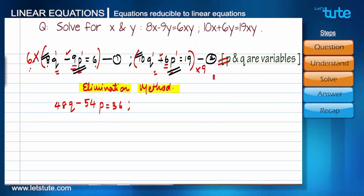And now for the second term, I have to multiply by 9. So 9 into 10 is 90q plus 6 into 9, 54p equals 19 into 9, which is 171. After this multiplication you can see that terms with variable p are having the same coefficient, that is 54. Since we have opposite signs we have to add these two equations to eliminate p.